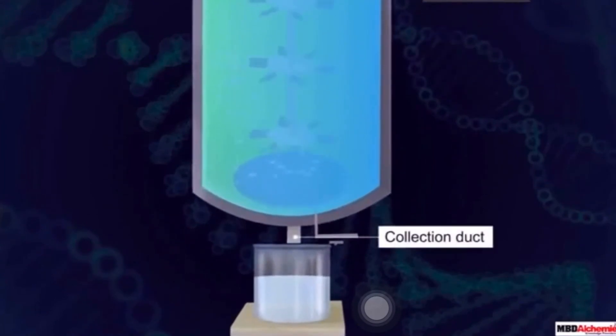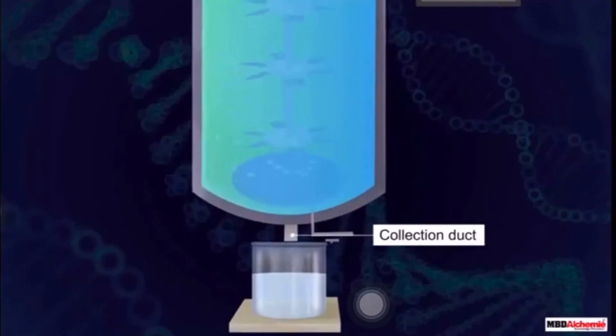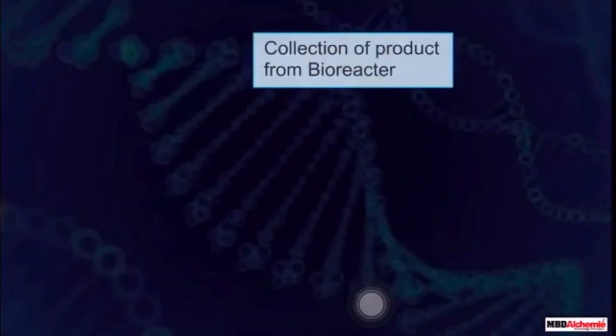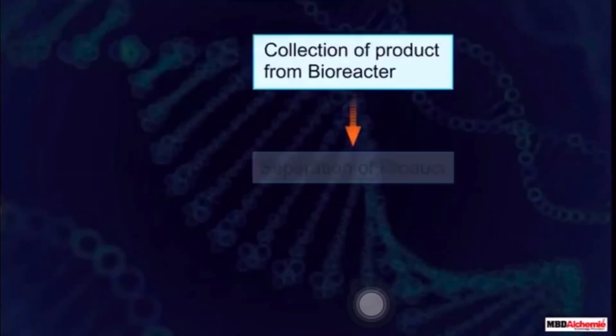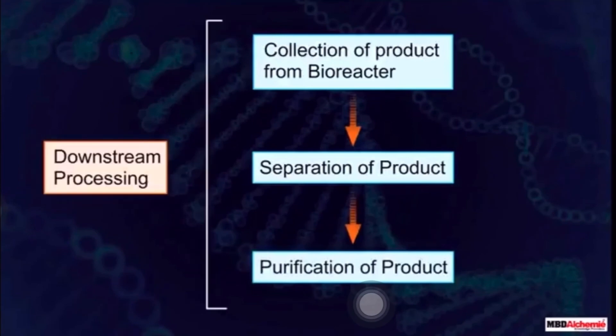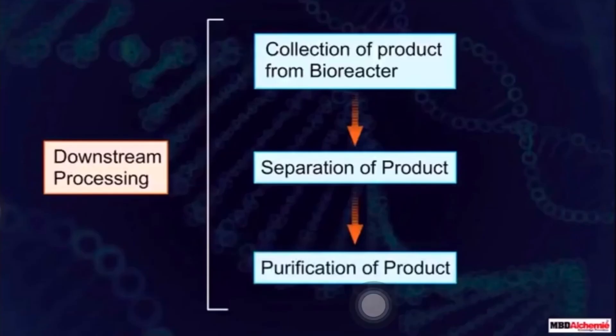Once the bioreactor has produced enough product, it is collected and that product is used for separation and purification. The process of separation and purification of that biosynthetic product is downstreaming process. Hence, the downstreaming process is the last step in genetic engineering.